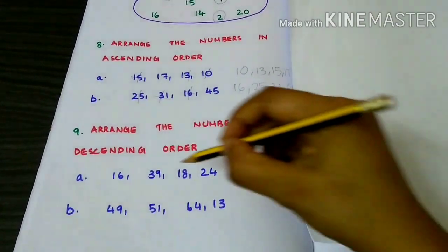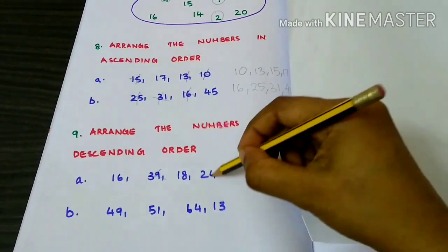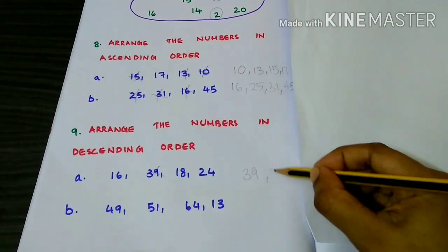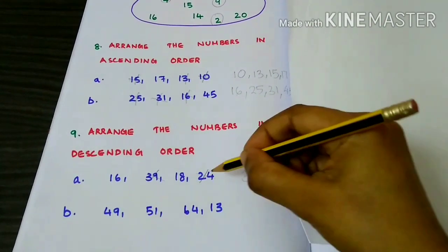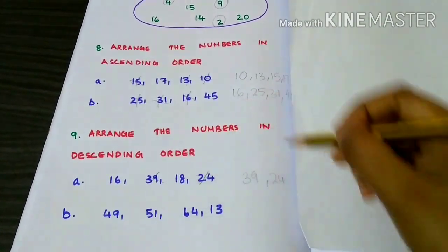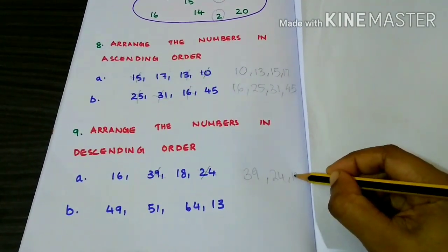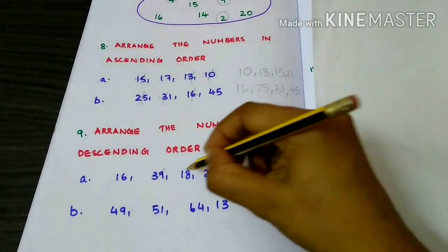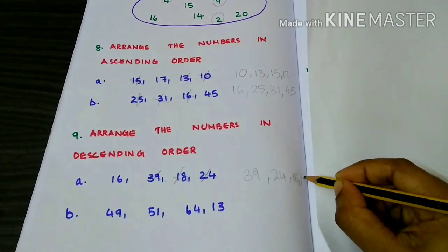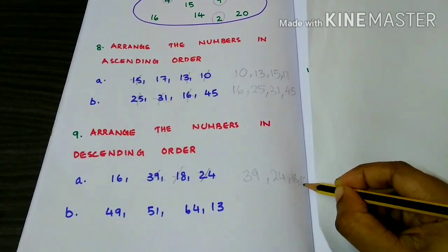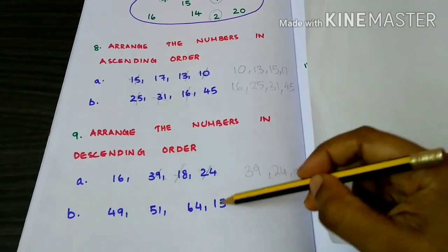Then the next biggest number, which is 24, followed by 18 and 16. Next set: 49, 51, 64, 13.